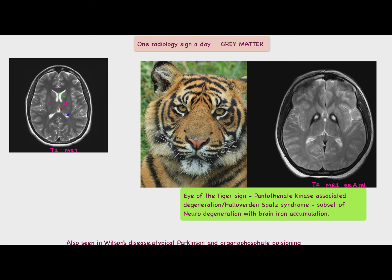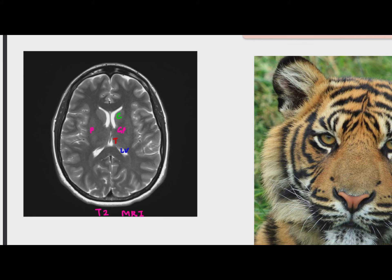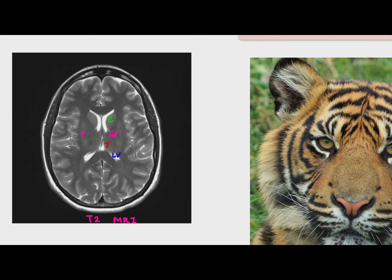Before we go to the sign, let's look at the basics of this brain MRI section. This is a T2-weighted MRI image. In T2, the white matter is dark, the gray matter is light, and the CSF appears bright. The structures labeled here include the lateral ventricle with its frontal horn and occipital horn, the caudate nucleus, the globus pallidus, the putamen lateral to that, and lower down, the thalamus.